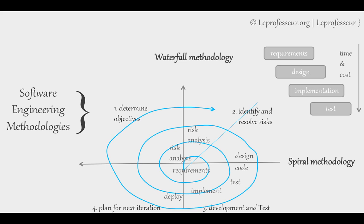Essentially, the spiral model takes ideas from both the waterfall model and the iterative methodologies. What we gain here is more control over project cost. In between iterations, we deploy P1, P2, P3 — those are working intermediate versions of the software. As you can see, costs end up becoming lower. But the burden is on the review and documentation after each phase. This works perfectly for projects like product development, operating systems, chip development, integrated circuit development, or large in-house project development.